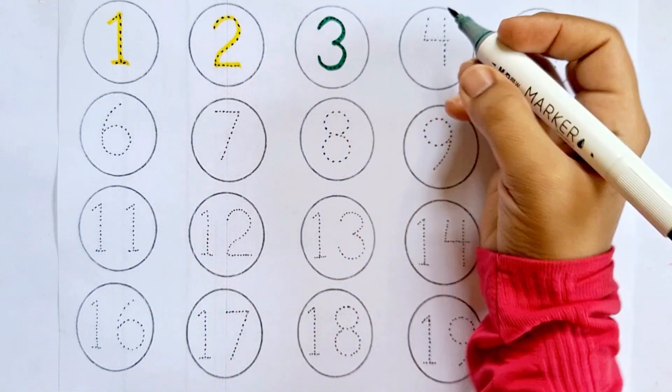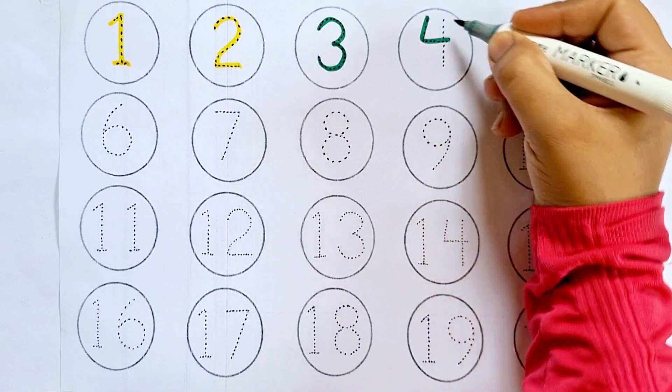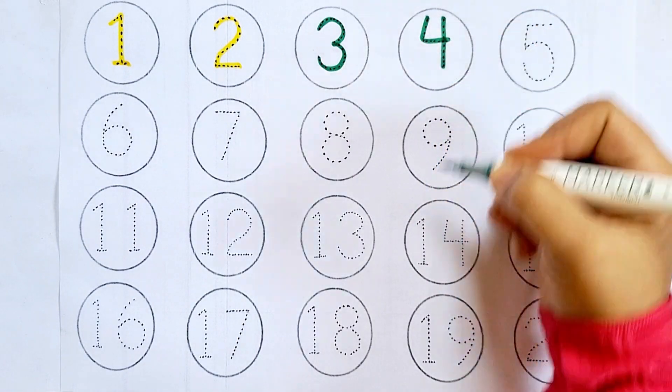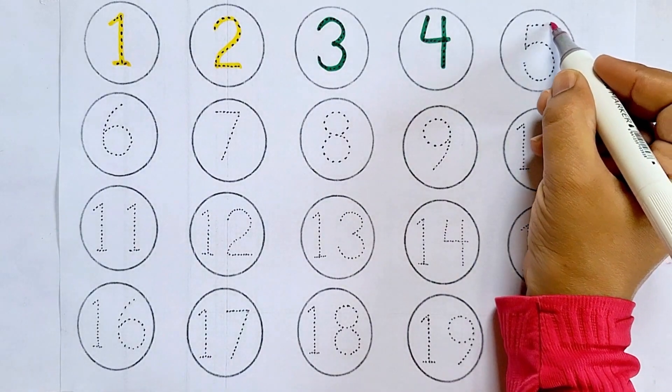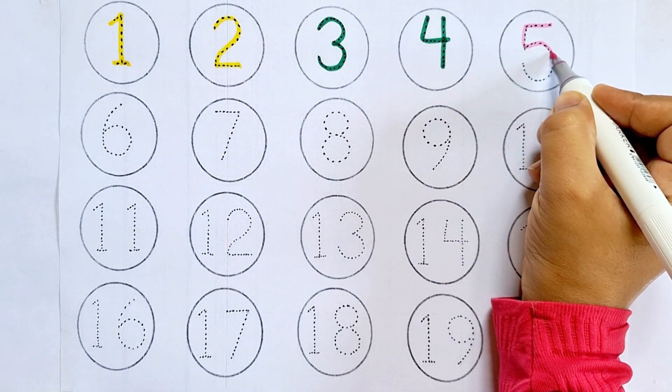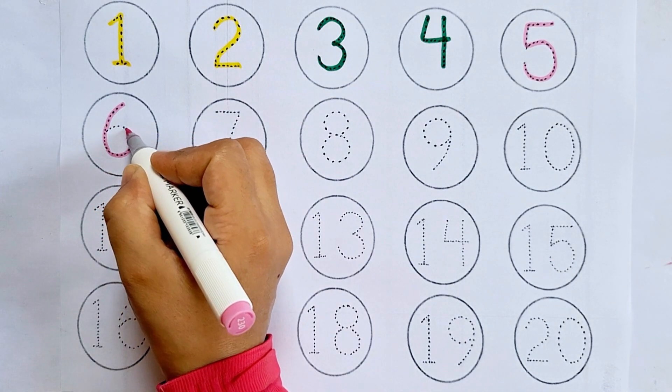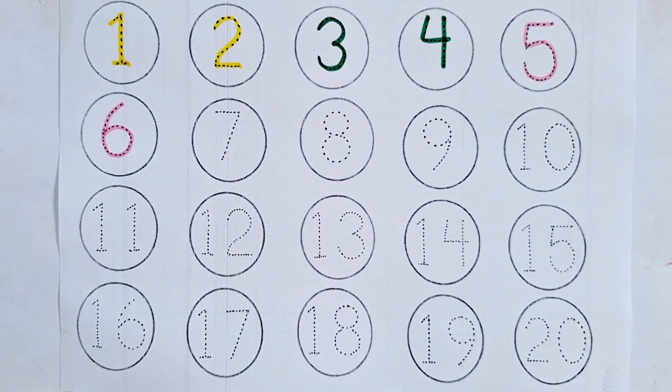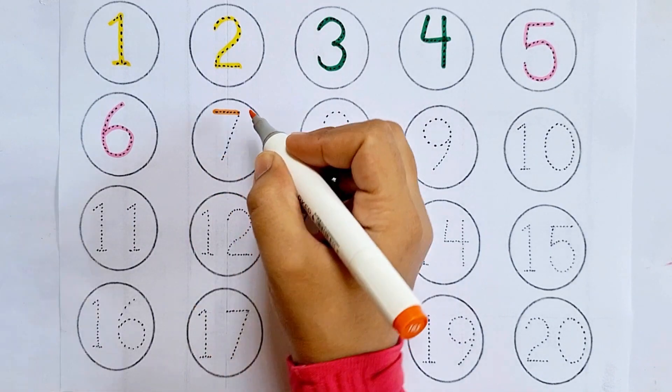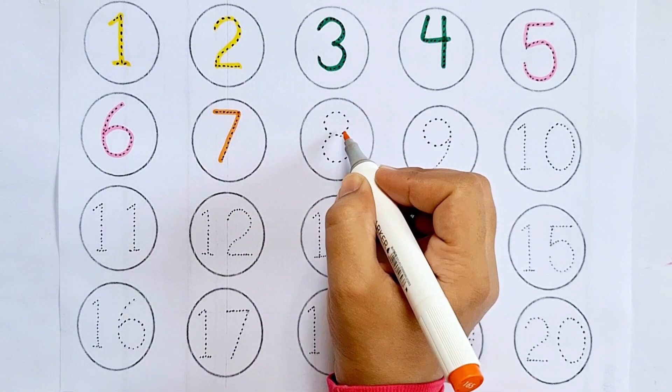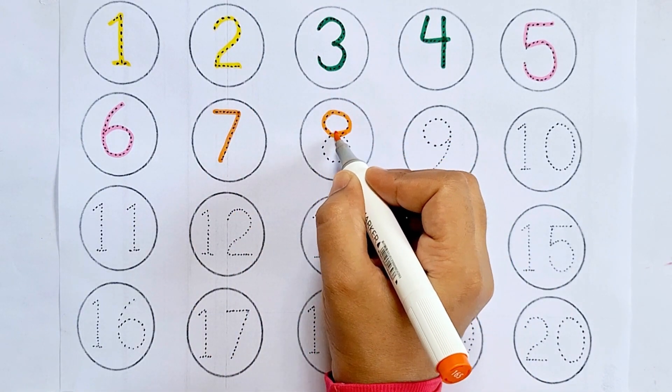Four, this is four. Five, this is five. Six, this is six. Seven, this is seven. Eight, this is eight.